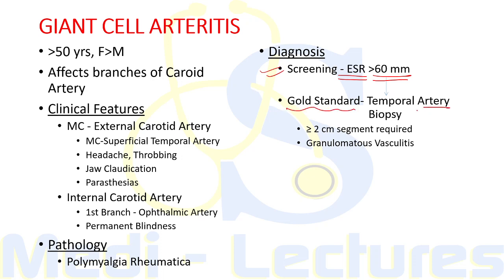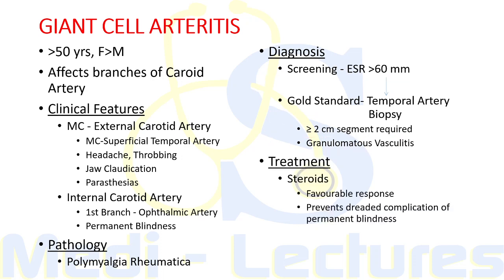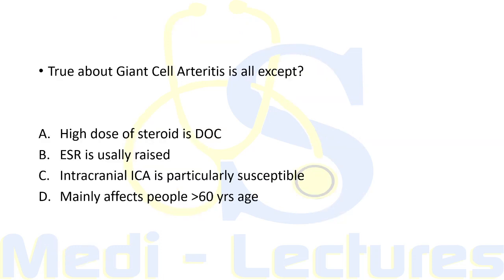ESR is usually more than 60 mm at the end of one hour. The gold standard test for confirmation is temporal artery biopsy. At least a two-centimeter segment is required, showing characteristic changes of granulomatous vasculitis with typical granulomas in the vessel wall. Treatment of choice is glucocorticoids (steroids), which has a favorable response and prevents the dreaded complication of permanent blindness.